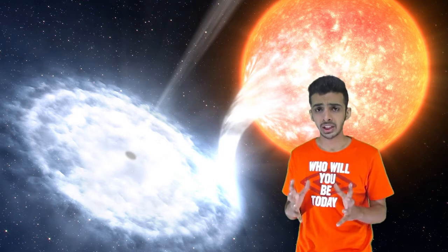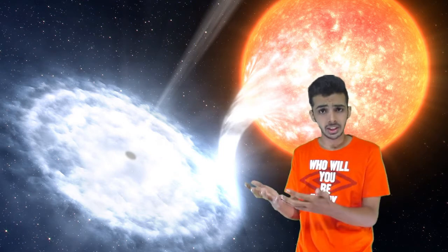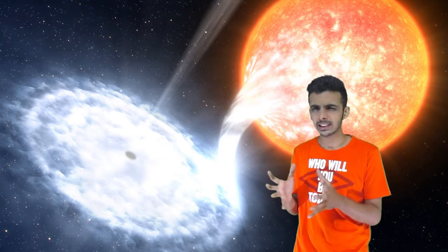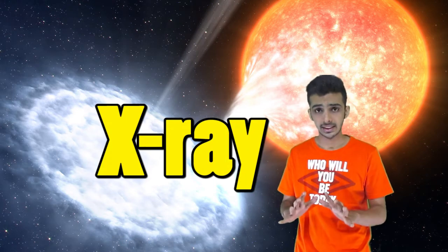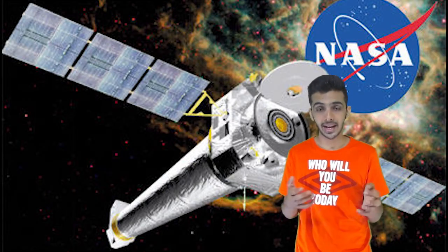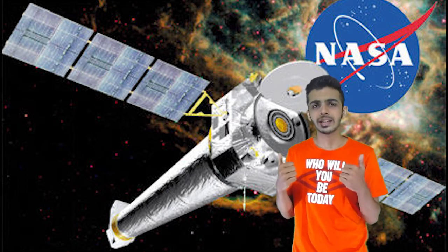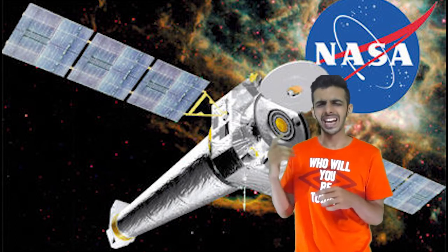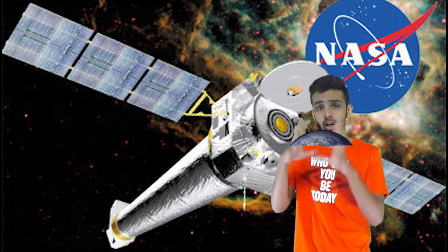And the falling material heats up to millions of degrees because of friction between the material. And when stuff heats up to millions of degrees, it emits X-rays. And this can be detected by X-ray telescopes which are orbiting our Earth, because X-rays don't penetrate our Earth's atmosphere.